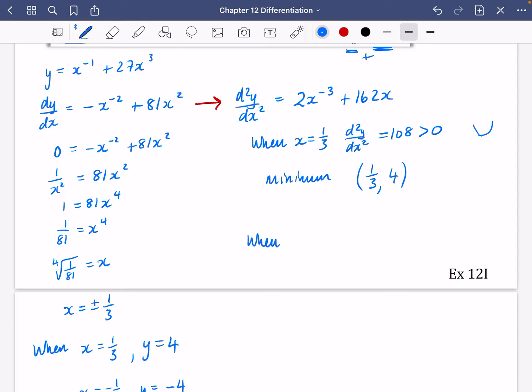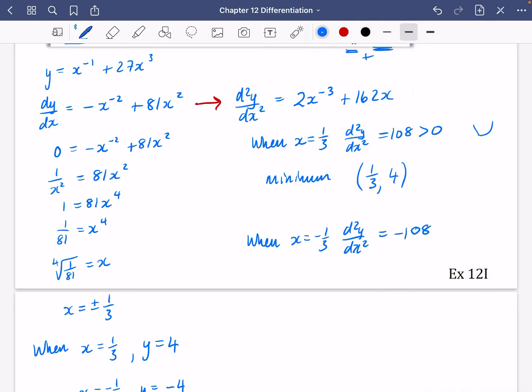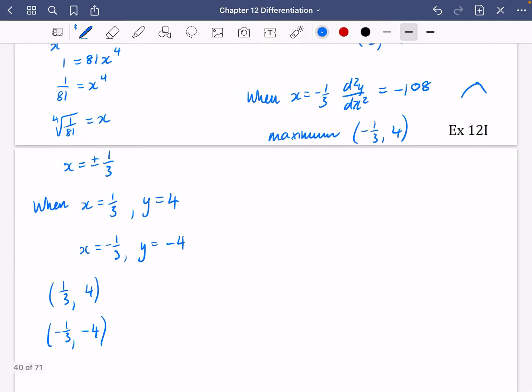And then the other one is going to be when x is equal to minus a third. So let's find out the second derivative. I'm going to type that into my calculator. So same thing as before. I'll type in minus a third, store that as the answer. And then it's going to do 2 answer to the minus three plus 162 answer. And you get minus 108. So that means every way you're looking is negative. In other words, it is a maximum point.